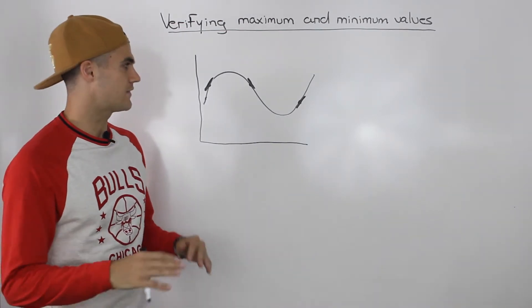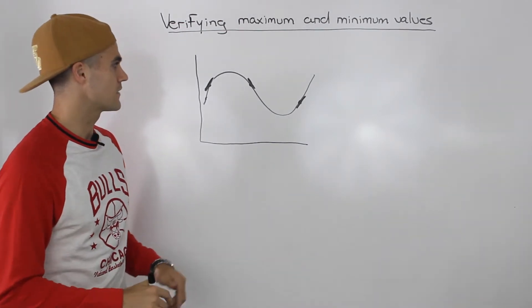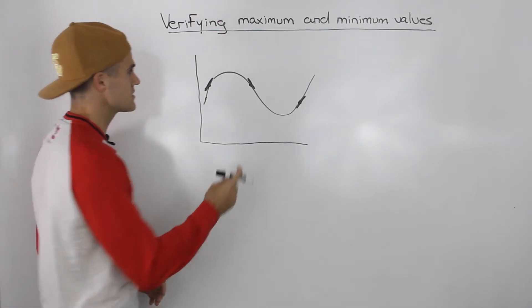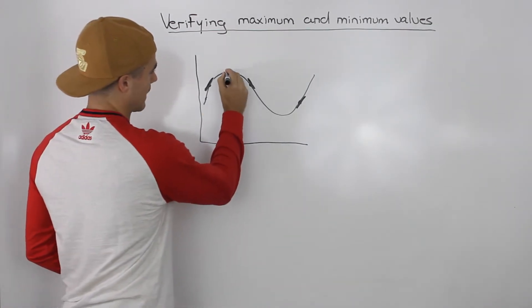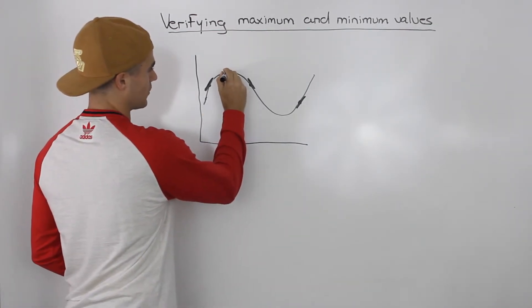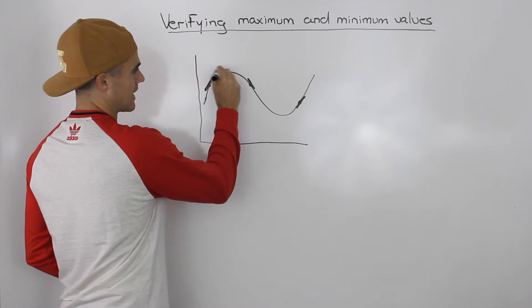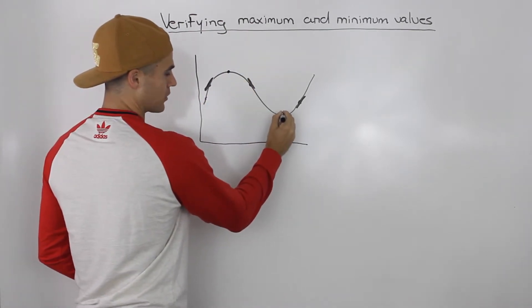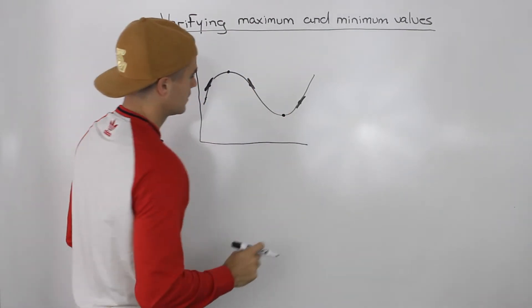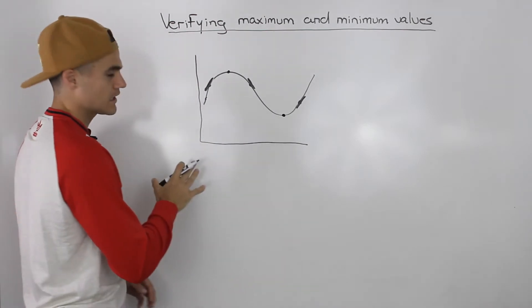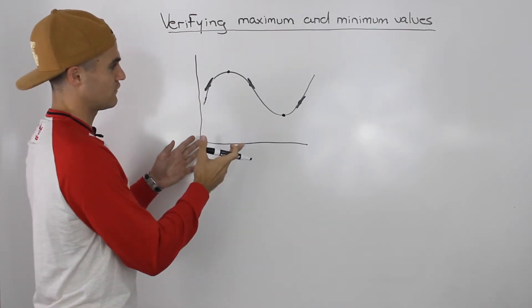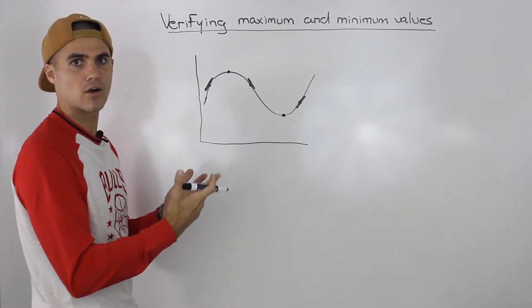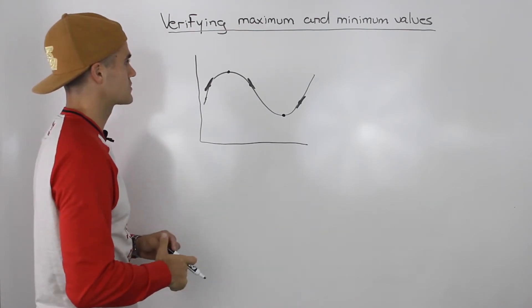So now what we're going to do in this video is we're going to look for local max and min points. So on this graph, that would be this point — that's a local maximum — and this point here, a local minimum. We're going to be taking points like that on a function and verifying that they are maximum or minimum values.